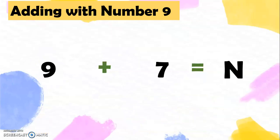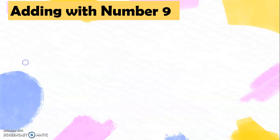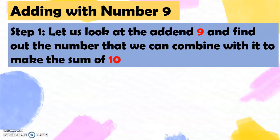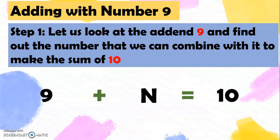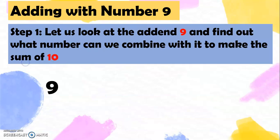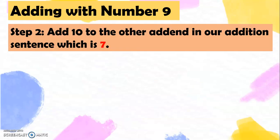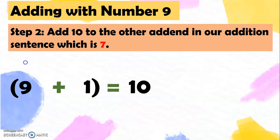Another example: we have 9 plus 7 equals a number. For step 1, let us look again at the addend 9 and find out the number we can combine with it to make the sum of 10. So 9 plus 1 equals 10. Now that we have 10, let's go to step 2: add 10 to the other addend, which is 7. So 9 plus 1 equals 10, and then 10 plus 7 equals? Very good, it's 17.